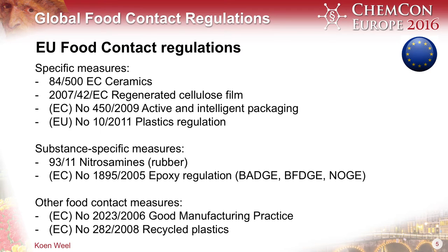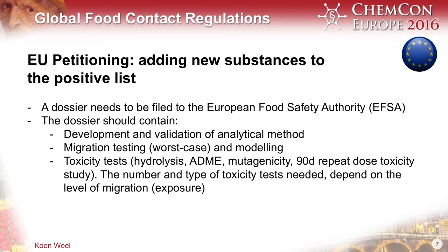This slide shows you the overview of other EU food contact regulations. There are the four specific measures, then some substance-specific measures, then there is the GMP regulation, and there is a specific regulation on recycled plastics. There's also a petitioning process — so suppose you would like to add a substance to be used in food contact materials.